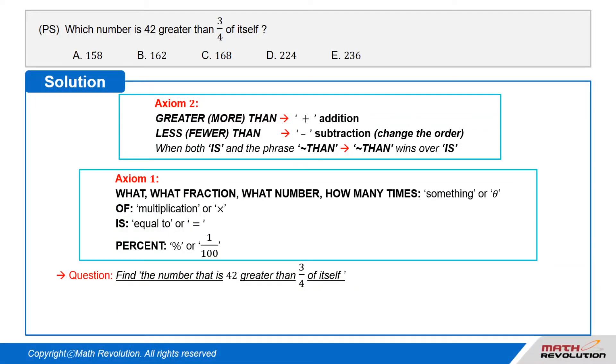First, let's represent the number as N, where N stands for the initial number. The number N is equal to 42 greater than 3/4 of N.